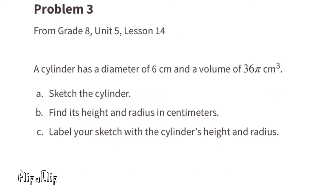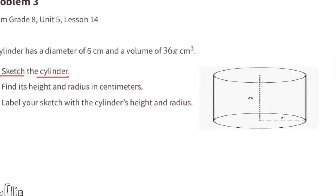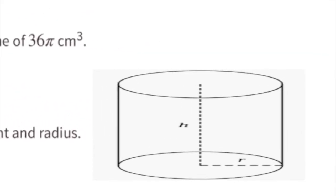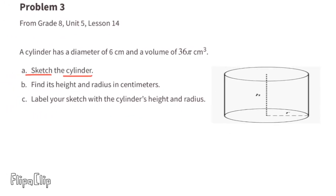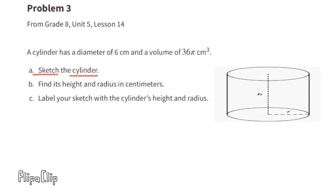Problem number 3. From 8th grade Unit 5 Lesson 14. A cylinder has a diameter of 6 centimeters and a volume of 36 pi centimeters cubed. A. Sketch the cylinder. This is what the cylinder would look like. But now we need to use the information that they gave us to help us find the height and radius in centimeters. And then we'll be able to label the cylinder's height and radius.